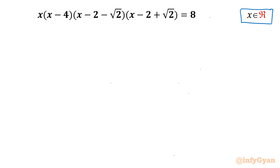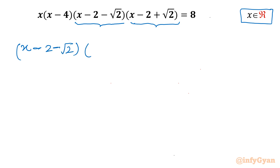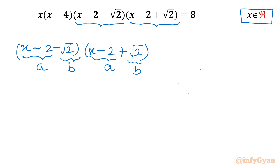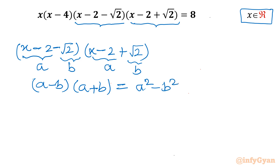Let's get started by considering these two brackets separately: (x minus 2 minus √2) and (x minus 2 plus √2). If we presume x minus 2 as 'a' and √2 as 'b', then we can see it is the difference of two squares formula — (a minus b)(a plus b). So I will write it as a² minus b², which gives us (x minus 2)² minus (√2)².